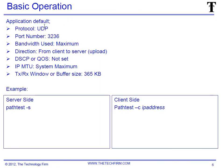Basic operation — here are all the defaults. Protocol is UDP, port number is 3236, bandwidth is max, direction is an upload from client to server, Nokia OS, and the IP MTU or packet size is set to the maximum — whatever the default is for that system.